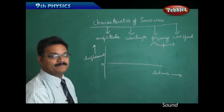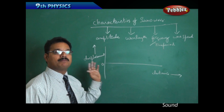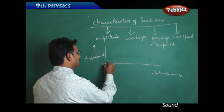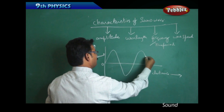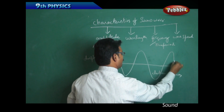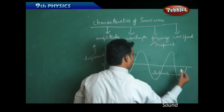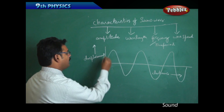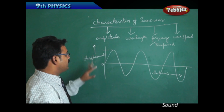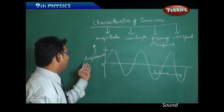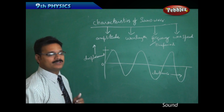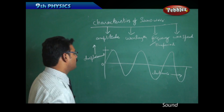In the earlier class I told you that whenever sound is produced it creates compressions and rarefactions. These compressions and rarefactions are shown in the waveform. On the y-axis you can also take pressure and density. For gases or solids you can take displacement; x-axis remains the same — distance.